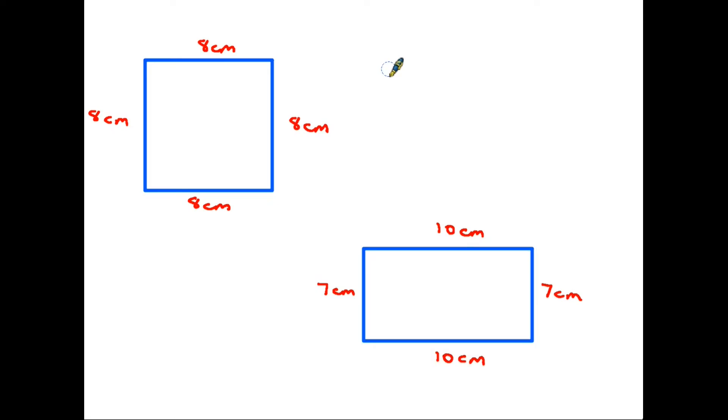Let's start on the top left hand side where I have drawn a square. Now the one thing we know about a square is that all four sides are the same length. So perimeter is measuring around the outside, so all we need to do here is 8 plus 8 plus 8 plus 8. Therefore the perimeter is 32 centimeters.